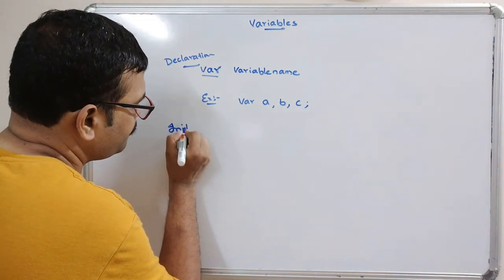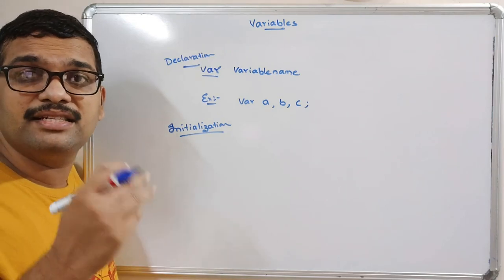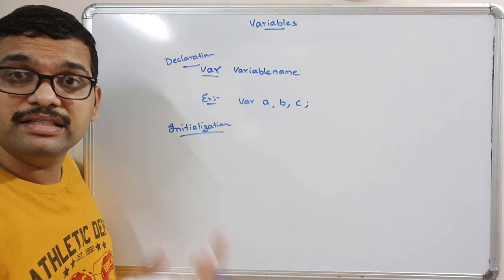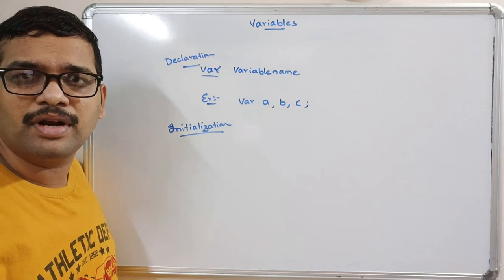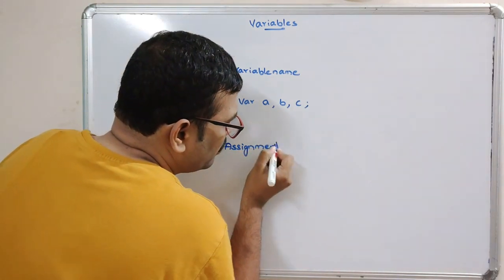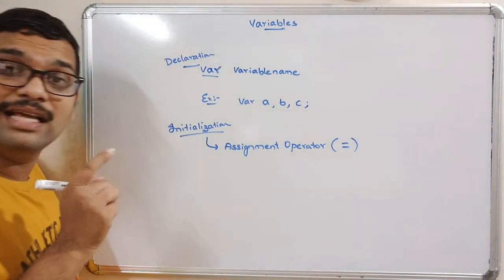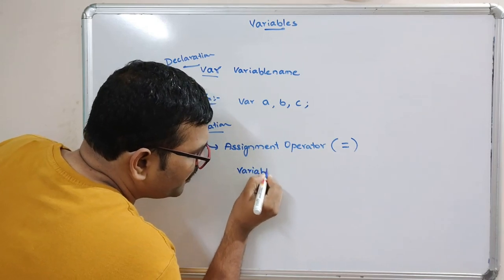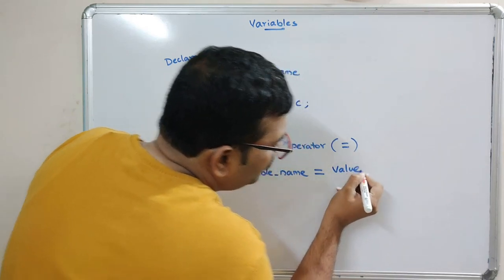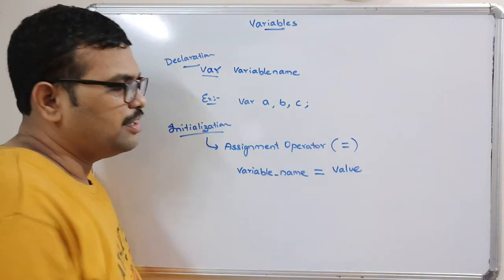Now, initialization. Initialization means assigning some value to that particular variable. We have to give some value to that variable — either it can be an integer, a string, or any other data type. This happens with the help of the assignment operator. The assignment operator is nothing but a single equals sign. So: variable name equals value.